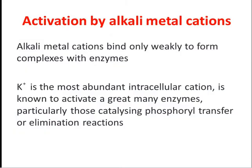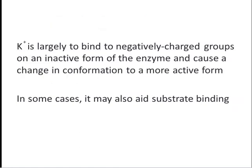We will now see how various types of metals activate various enzymes. First, activation by alkali metal cations, which involves sodium and potassium ions. Alkali metal cations bind only weakly to form complexes with enzymes. However, K⁺, the most abundant intracellular cation, is known to activate a great many enzymes, particularly those catalyzing phosphoryl transfer or elimination reactions. The role of K⁺ is largely to bind to negatively charged groups on an inactive form of the enzyme, causing a conformational change to a more active form, though in some cases it may also aid substrate binding.